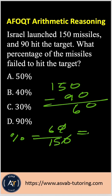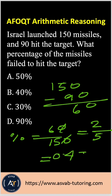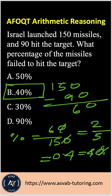If you simplify by dividing top and bottom by 3, that gives you two-fifths. Converting two-fifths to a decimal gives you 0.4, and as a percent that gives you 40%. So the correct answer is option B.